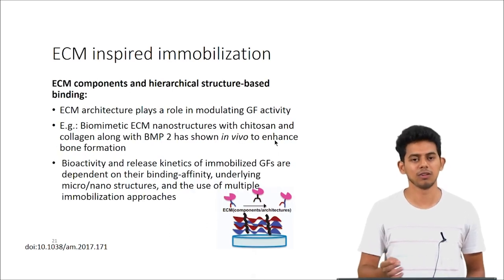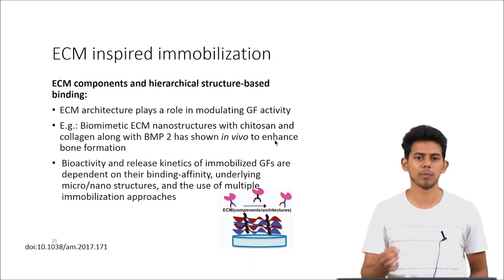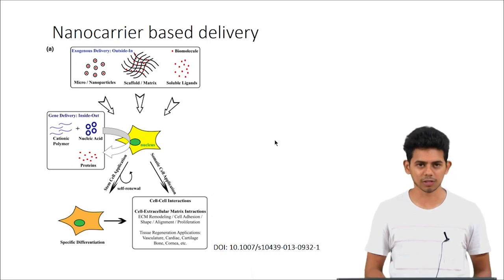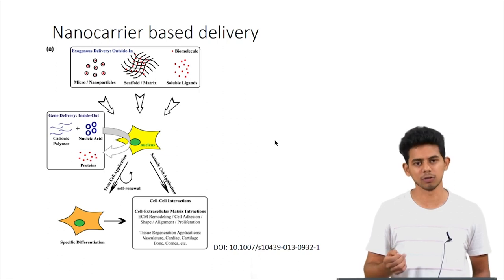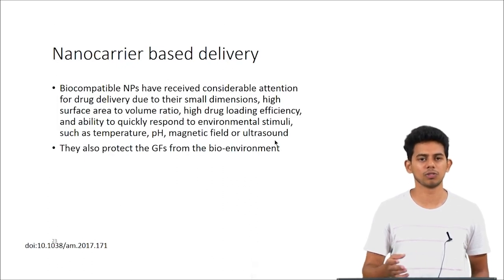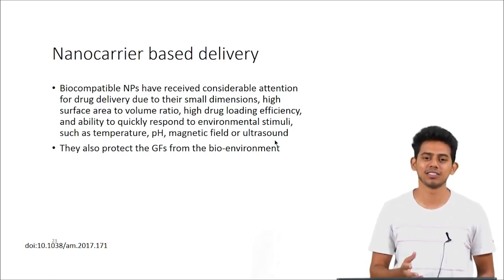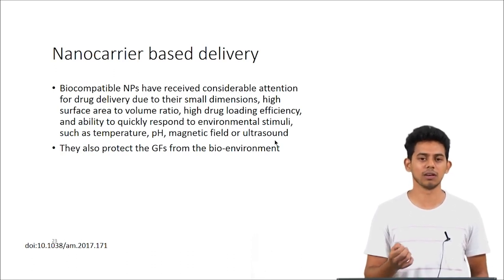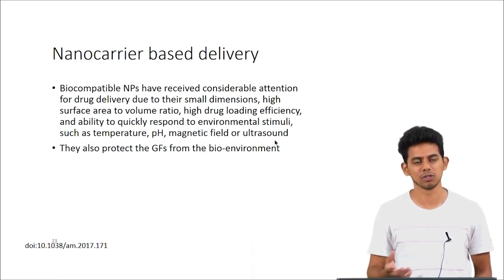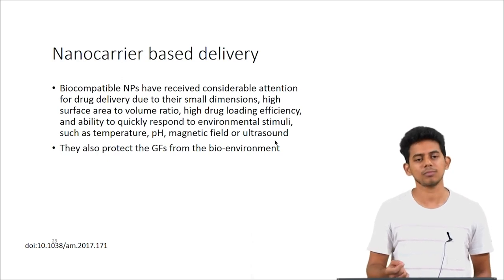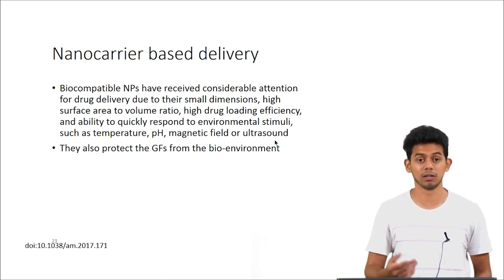Another ECM-inspired approach uses the structure the ECM provides: biomimetic ECM nanostructures can be achieved using the scaffold itself, improving growth factor affinity towards the molecules. The next approach is nanocarrier-based delivery using nanoparticles. The advantage is that nanocarrier-based delivery is already well-studied in drug delivery systems, with very high loading efficiency. These carriers can quickly respond to environmental stimuli such as temperature or pH, making spatial control easy — releasing growth factors only at the target site. They also protect growth factors from the biological environment, preventing degradation by the physiological system.